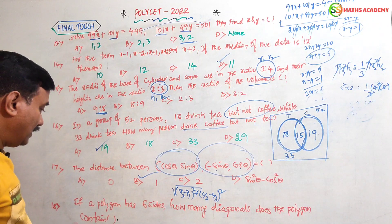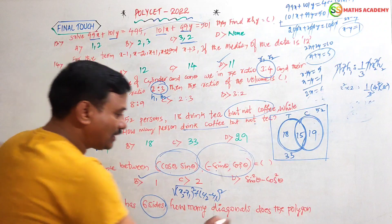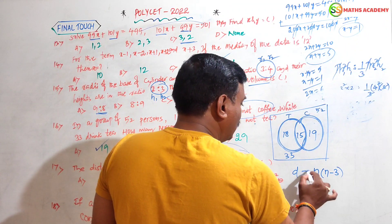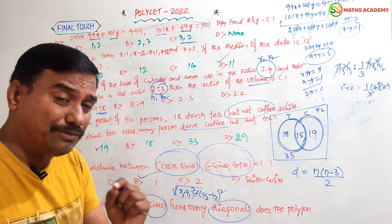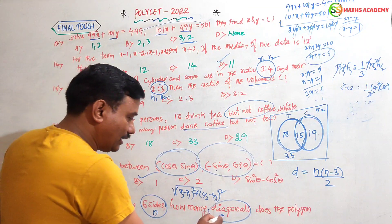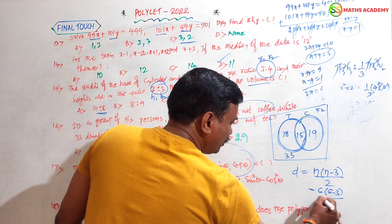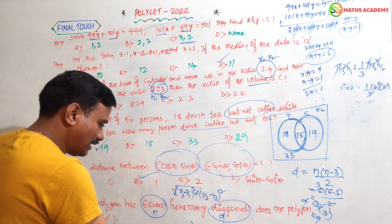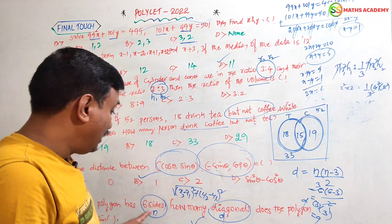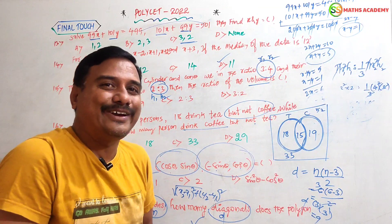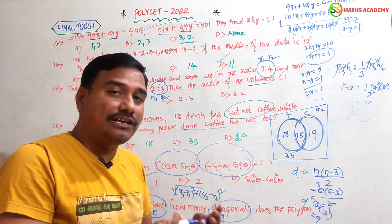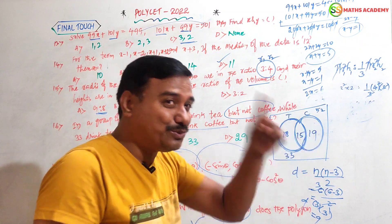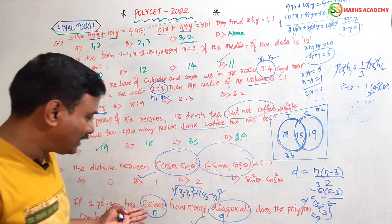If a polygon has 6 sides, how many diagonals does it have? The formula for diagonals is n(n-3)/2. Here n = 6: 6 × (6-3) / 2 = 6 × 3 / 2 = 9. Remember: a triangle (3 sides) has 0 diagonals. A quadrilateral (4 sides) has 4(4-3)/2 = 2 diagonals. For 6 sides the answer is 9.